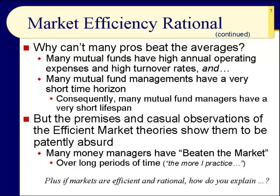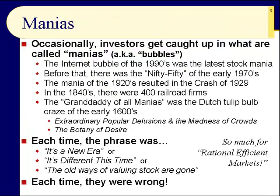Let's ask this question: if markets are efficient and rational — which I don't believe they are, because we're humans, and we're not always rational or efficient — how do you explain manias and bubbles? Occasionally, investors get caught up in what are called manias, also called bubbles, and it happens. That's what the history of capitalism is: a history of manias, bubbles, and subsequent crashes.